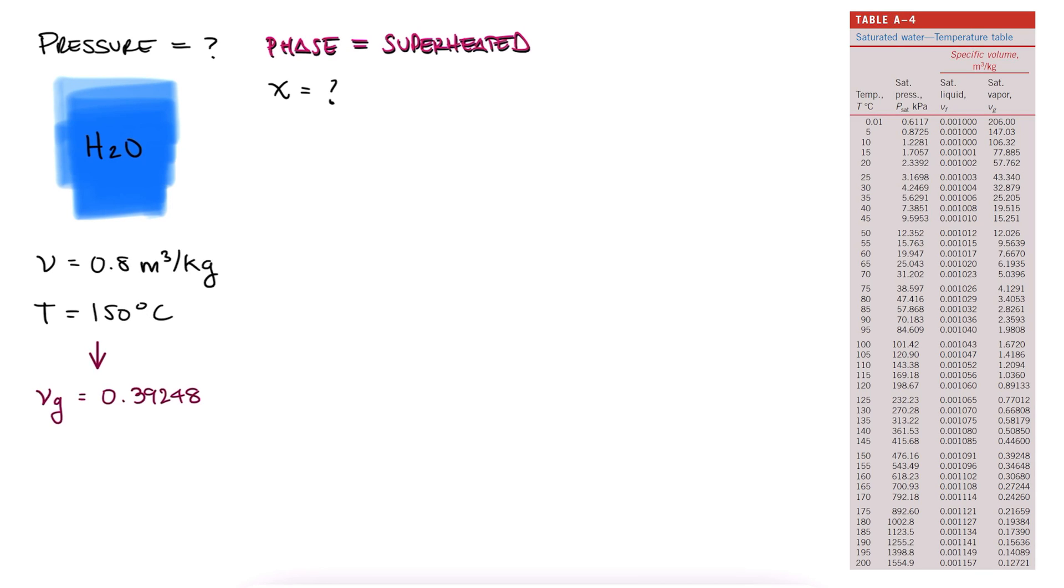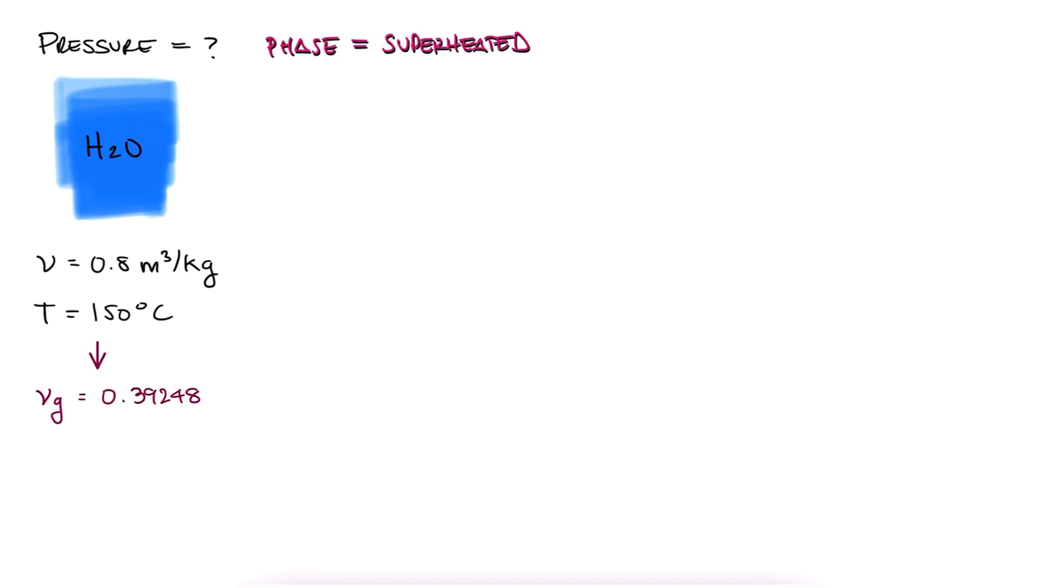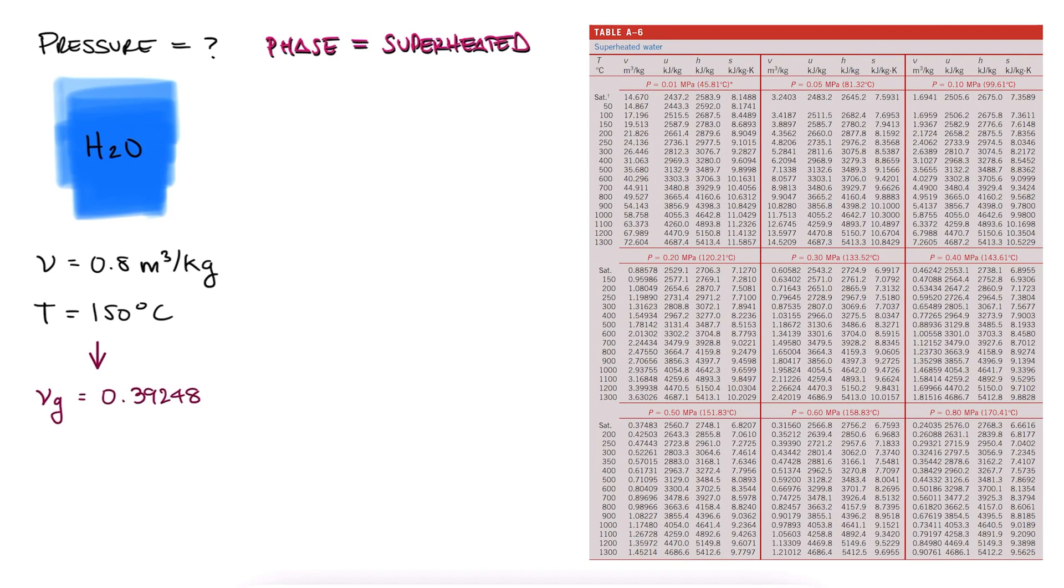Therefore, we won't be finding the quality of our substance. With this information, we go to our superheated tables and look for a temperature of 150 degrees Celsius.